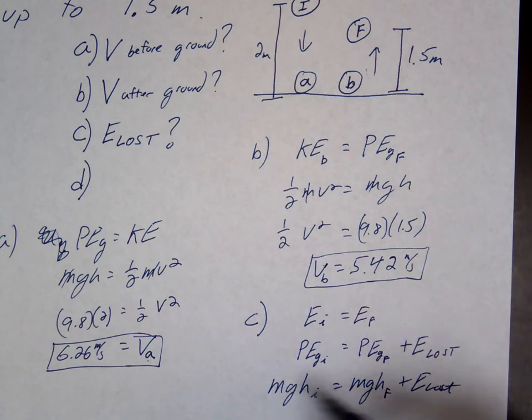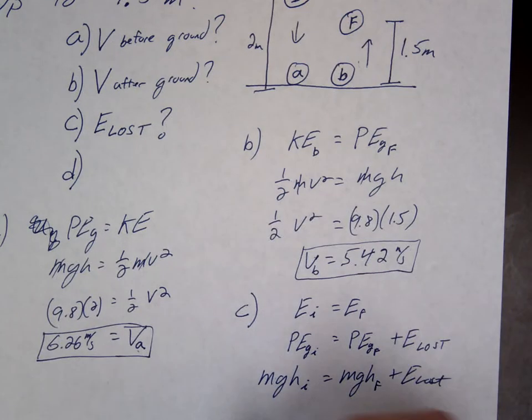So MGH at the very beginning should equal MGH at the very end plus E lost. And then be careful, you cannot cancel MGH. Okay, notice it's only in two of the three, not all three.